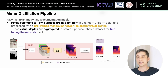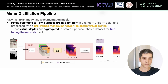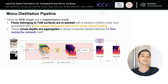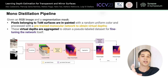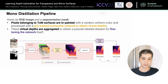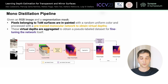Let's dive into our annotation pipeline, which is the crucial part of our approach. The pipeline is designed to generate virtual depth annotations for transparent and mirror surfaces using a monocular network pre-trained with state-of-the-art results. Given an RGB image and segmentation mask, we first identify pixels belonging to transparent surfaces. These areas are then painted with a random uniform color multiple times. The segmentation mask can be obtained from a ground-truth dataset such as Trans10K, or inferred by a semantic segmentation neural network.